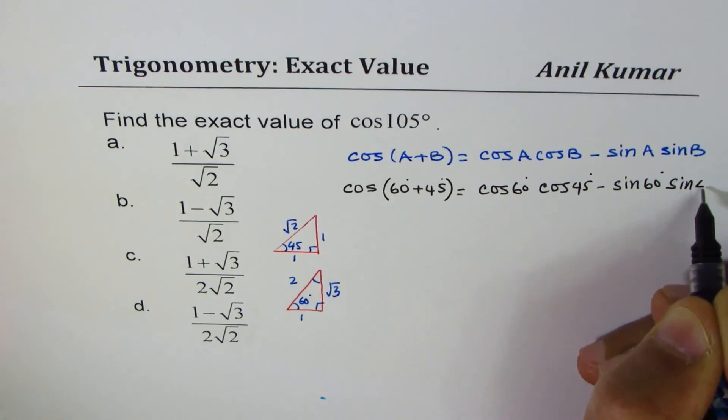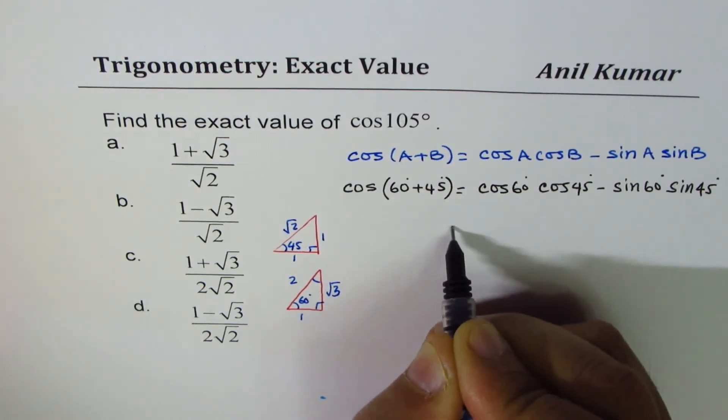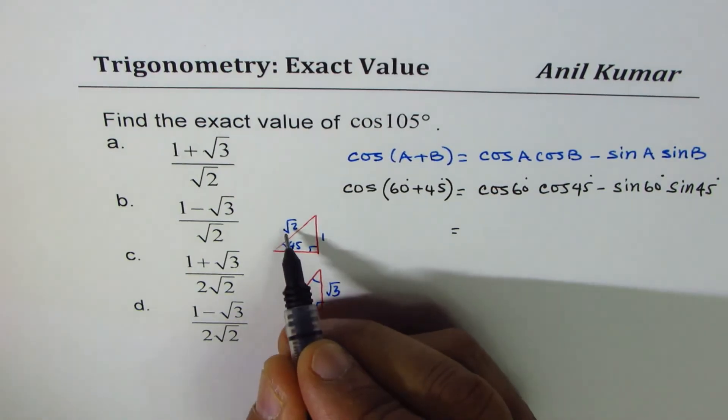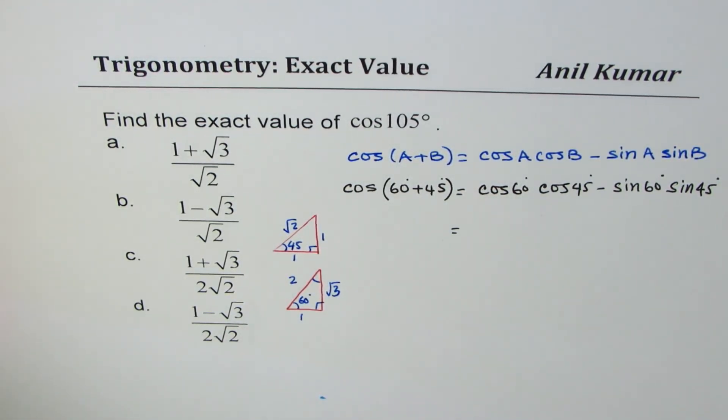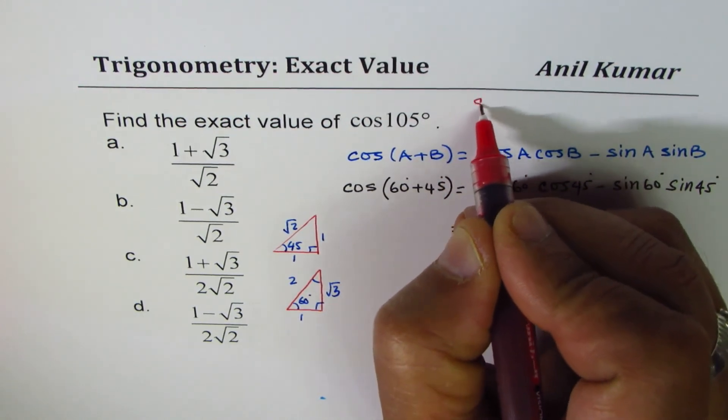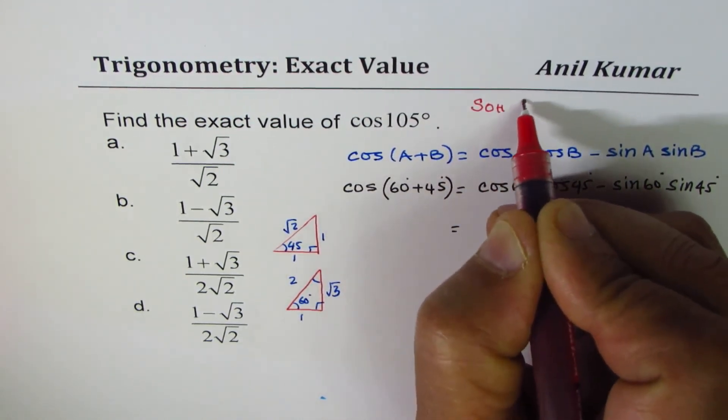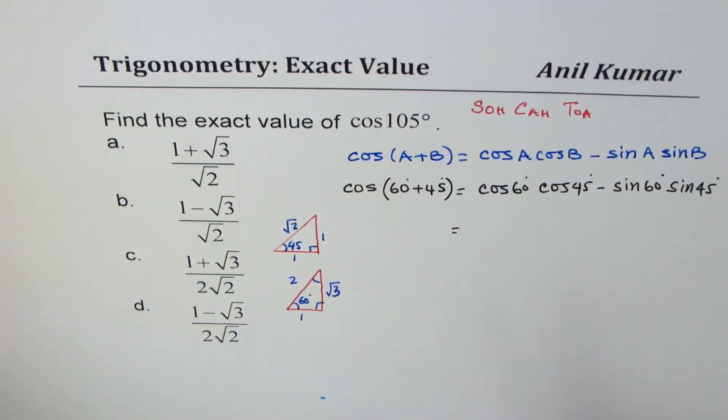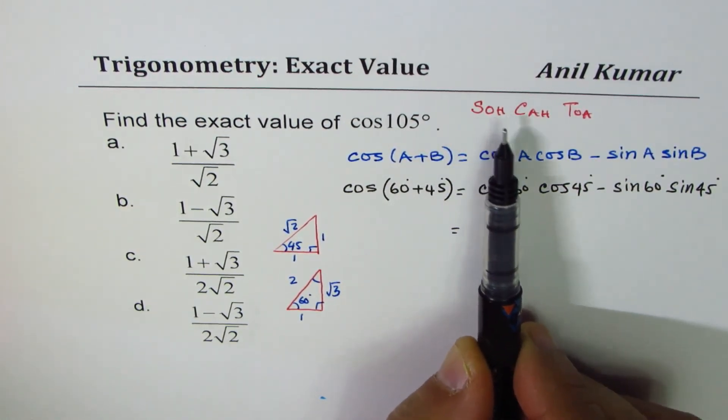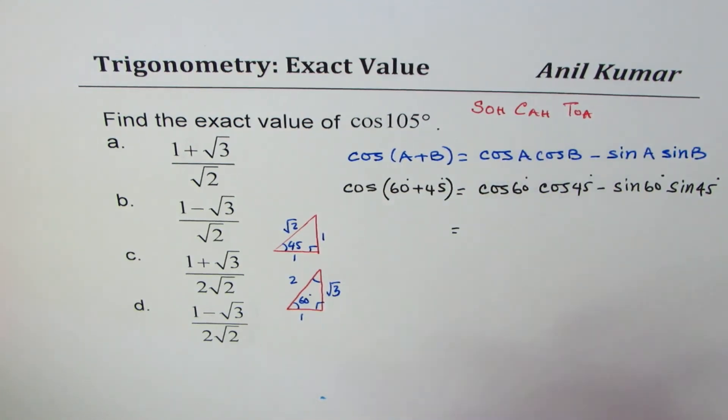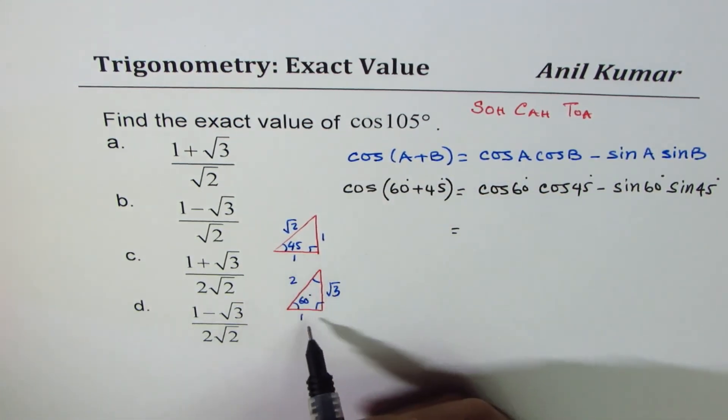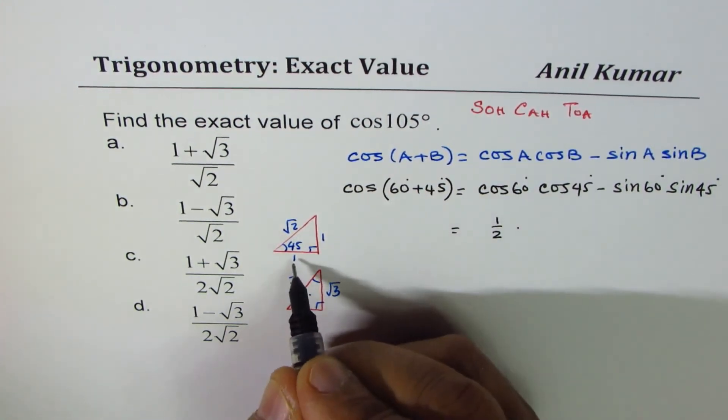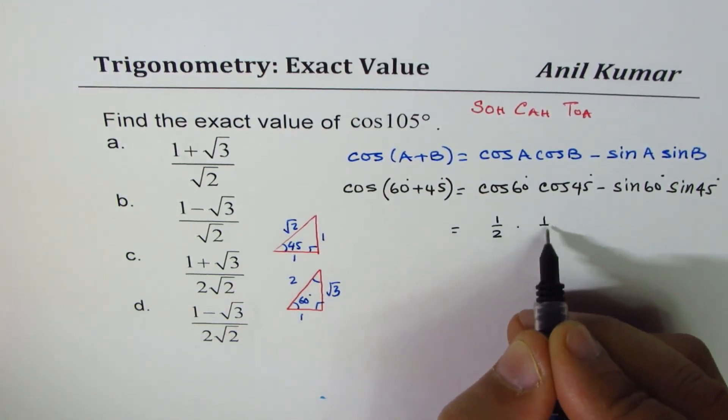Cos of 60 degrees will be adjacent side over hypotenuse. Let's also remember SOH CAH TOA: sine is opposite over hypotenuse, cos is adjacent over hypotenuse. So cos 60 degrees adjacent over hypotenuse is 1/2, and 45 degrees adjacent over hypotenuse is 1 over square root 2.